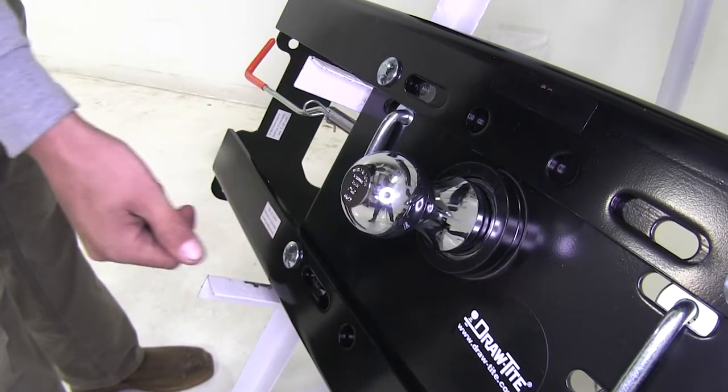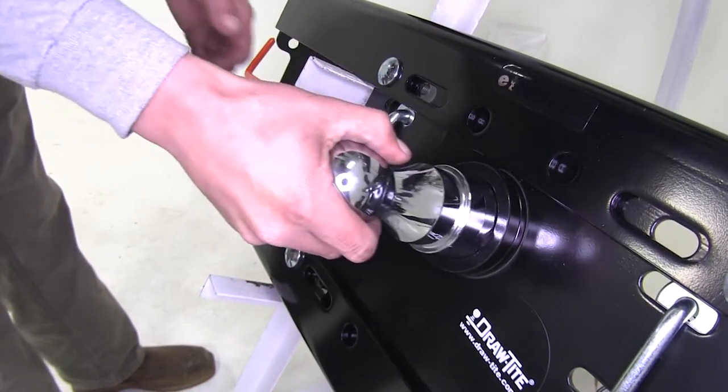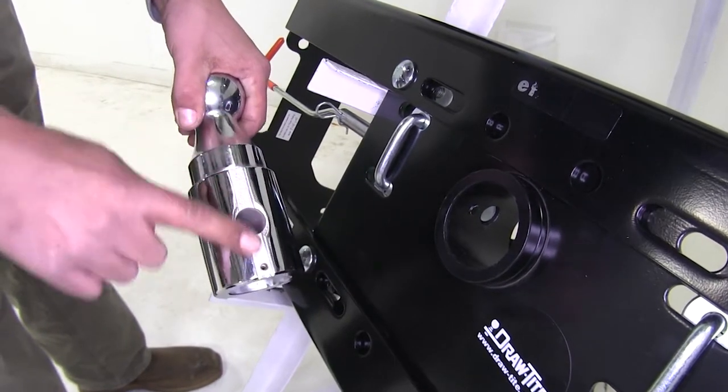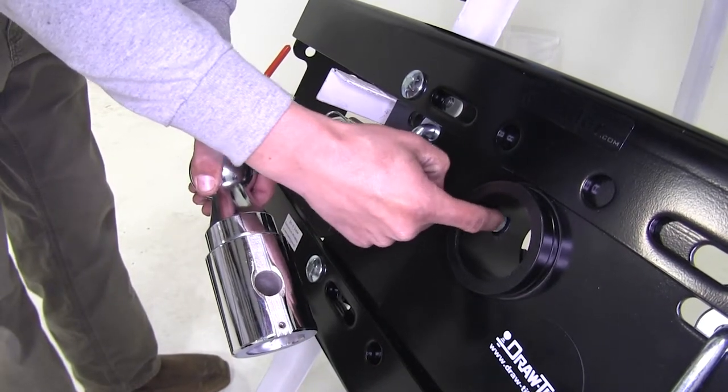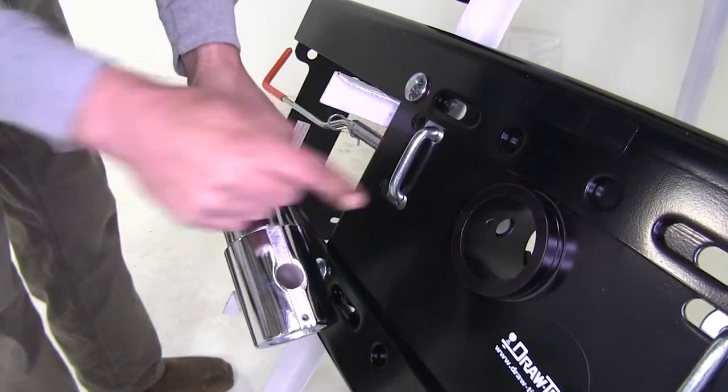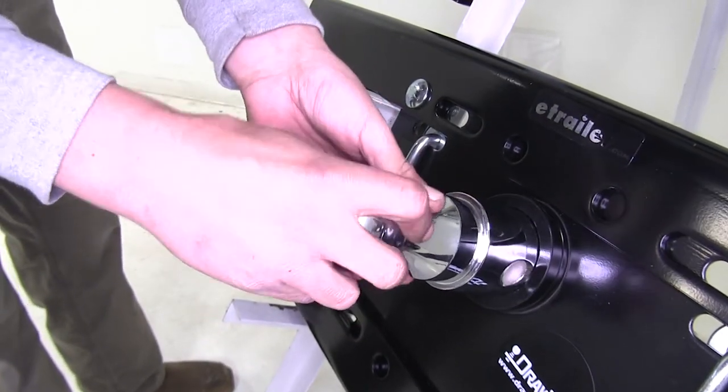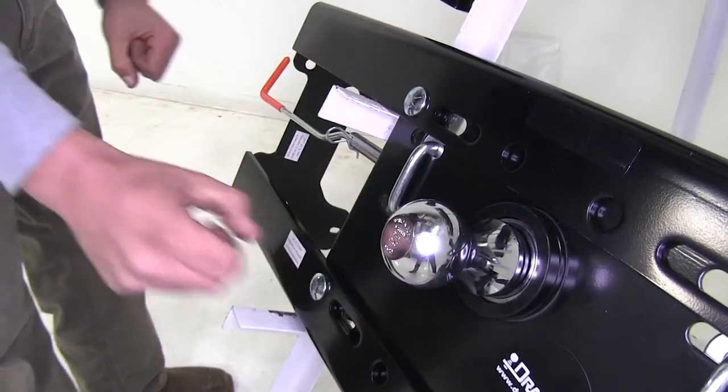Finally here, our hide-a-goose, it does have a nice chrome finish on the ball as well, but as you can see, it has a round shank. Now to make sure it doesn't move while it's inside of here, there's a small notch right here inside of our tube, as well as a notch in the ball, so you can't put the ball in incorrectly, and that way it keeps it nice and secure and it's not going to turn around and move on you.